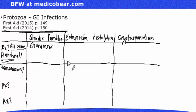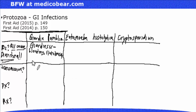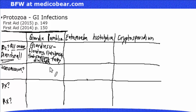Giardia lamblia causes giardiasis, which is characterized by bloating, flatulence, and foul-smelling, fatty diarrhea. This is typically seen in the question stem in campers or hikers who consume infected water from a stream contaminated with Giardia lamblia. Think campers or hikers — this is often seen in the question stem.